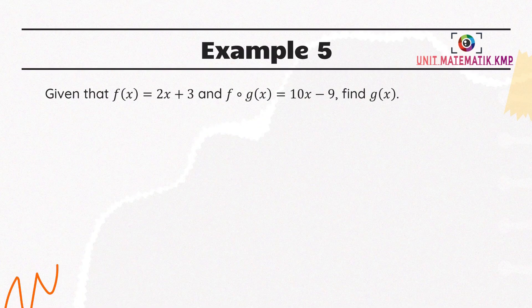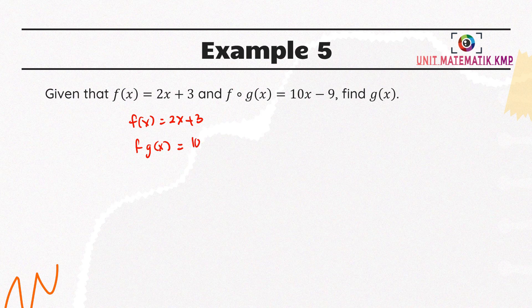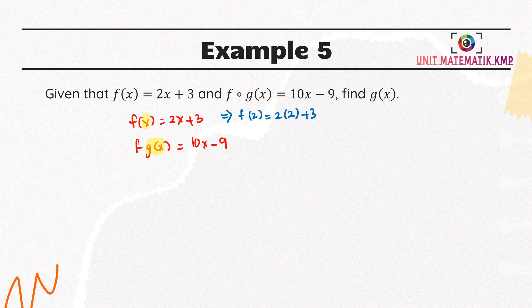Example 5: given f(x) equals 2x plus 3 and fg(x) equals 10x minus 9, find g(x). Both f(x) and fg(x) are actually function f. For the first function we can substitute any value into x — so now we want to substitute g(x) into function f.